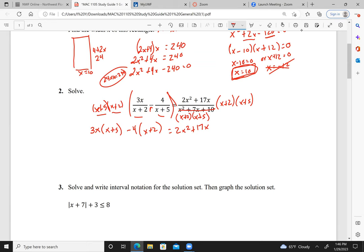Distributing, I have 3x squared plus 15x minus 4x minus 8 equals 2x squared plus 17x. Let's go ahead and move everything over and combine our like terms. Here I have 3x squared minus 2x squared gives me simply x squared. Here I have 15 minus 4x, which is 11x. Then I'm going to subtract 17x, so I get minus 6x.